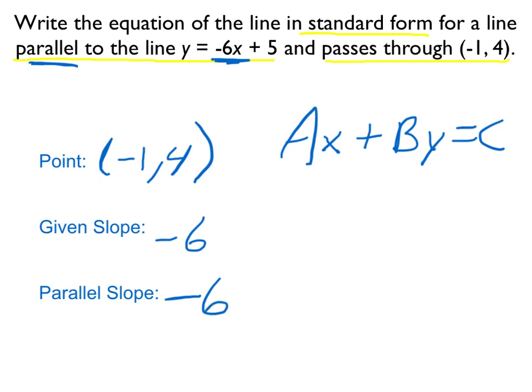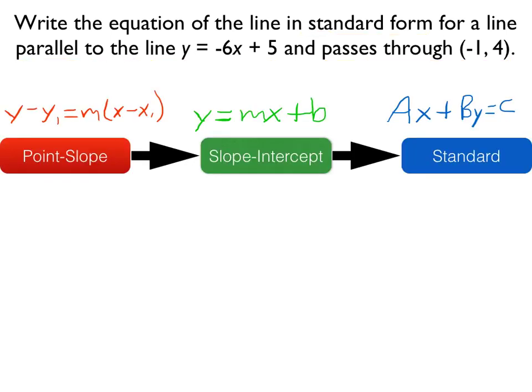So now we can work through the process of point-slope, to slope-intercept, to standard form. So we'll start with point-slope form, substituting the values for the variables that we know.